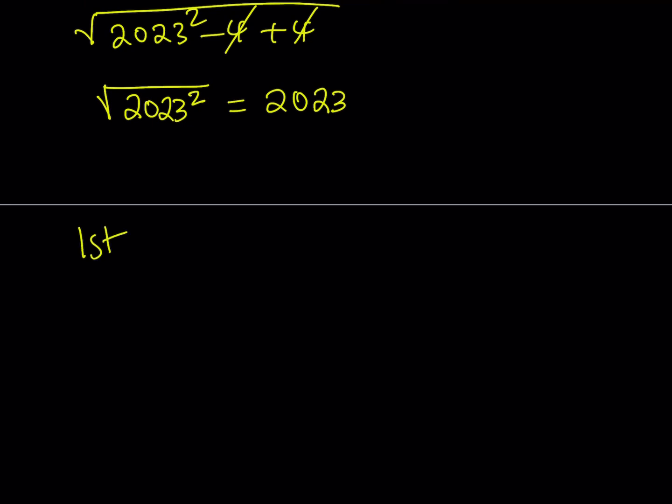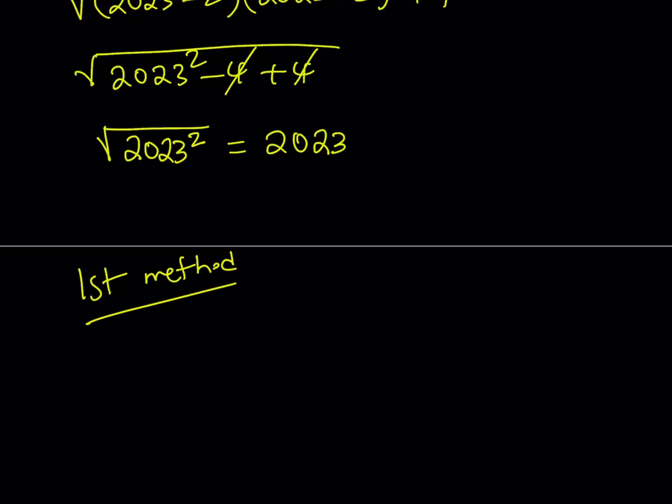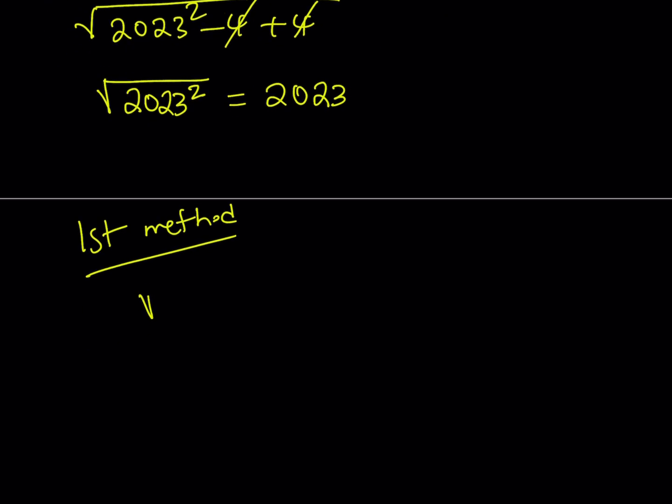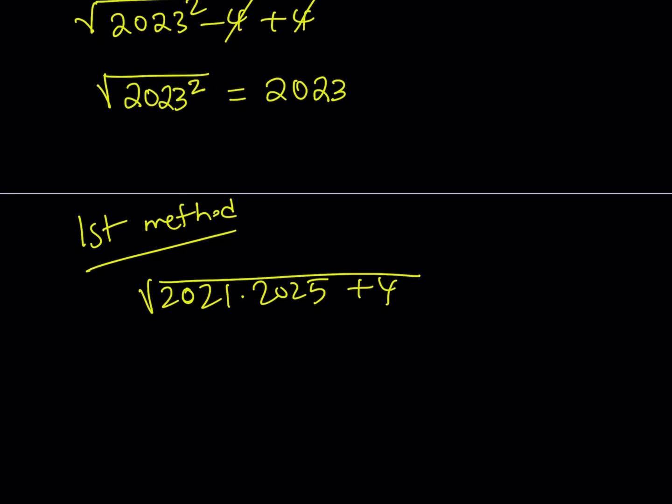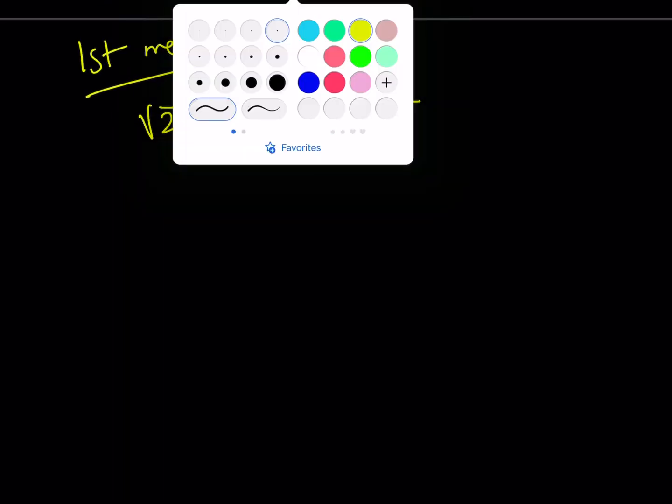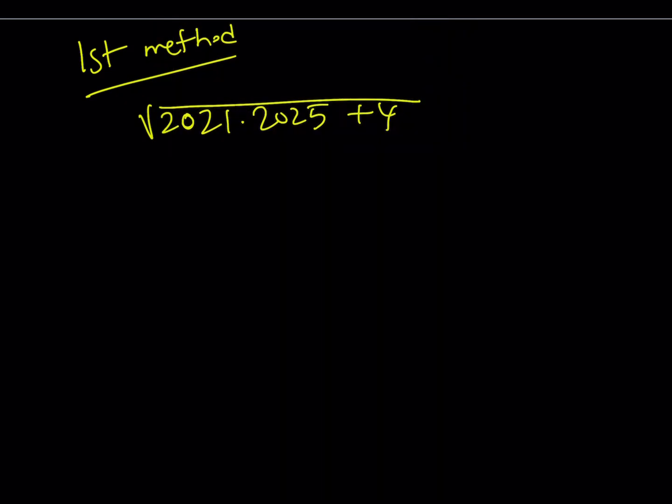Let's go ahead and do it with the first method now. And my expression if I rewrite it is 2021 multiply by 2025 plus 4. My first method involves a little bit of algebra so I'm going to use substitution. Let's go ahead and call this expression x and then 2025 is going to become x plus 4.